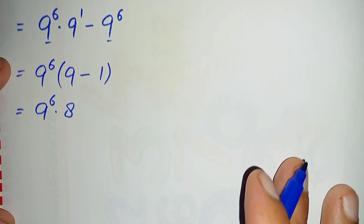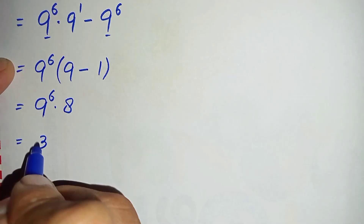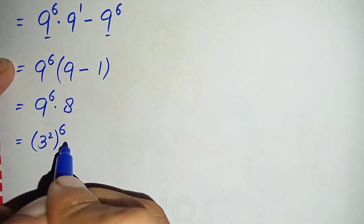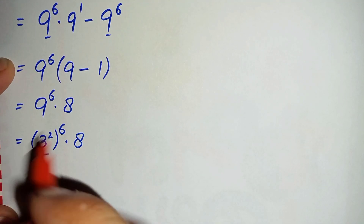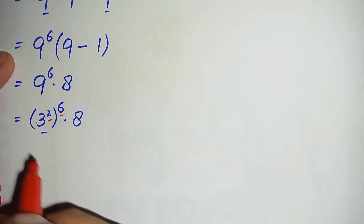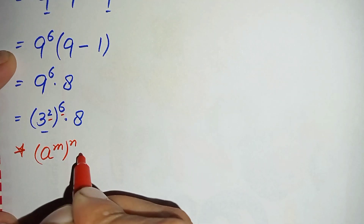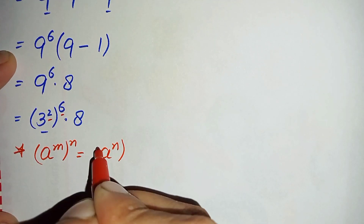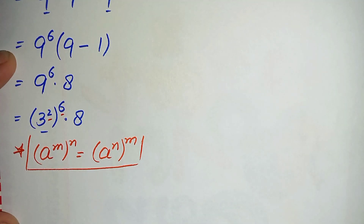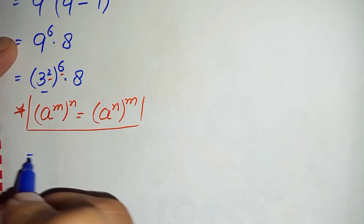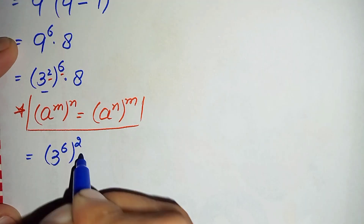Now we will change this 9 to its exponential form. We can write 9 as 3 squared, so this will become 3 squared, whole raised to power 6, times 8. Here we will use the exponential property: a raised to power m, whole raised to power n, can also be written as a raised to power n, whole raised to power m. Using this property, we interchange the two powers 2 and 6, so this becomes 3 raised to power 6, whole raised to power 2, times 8.